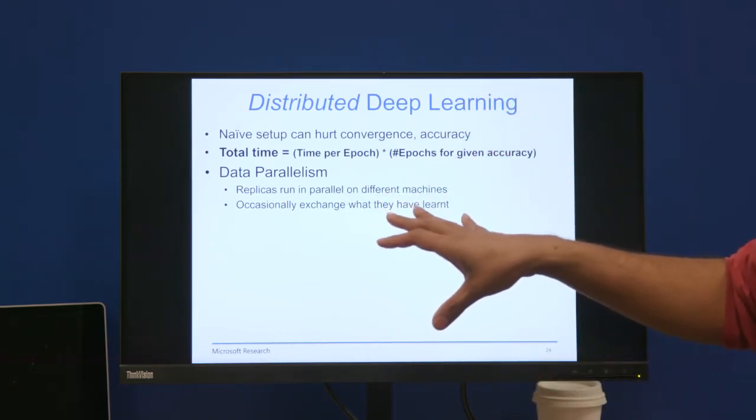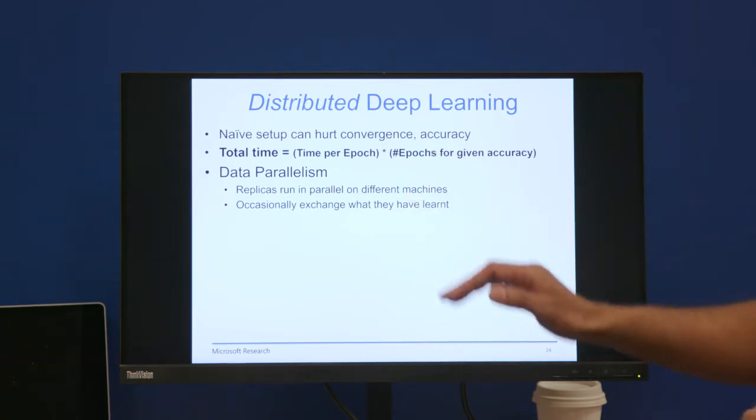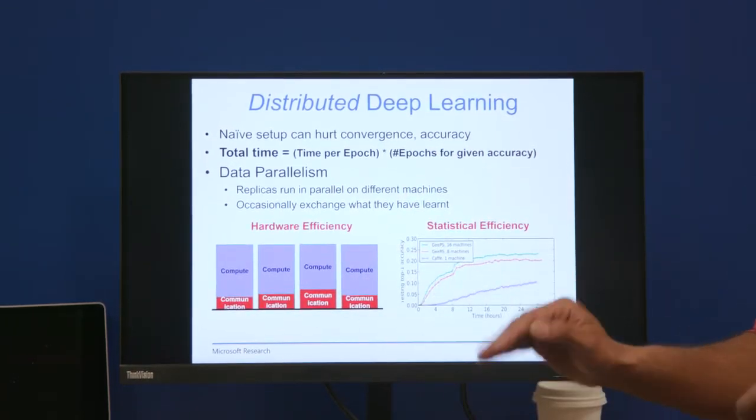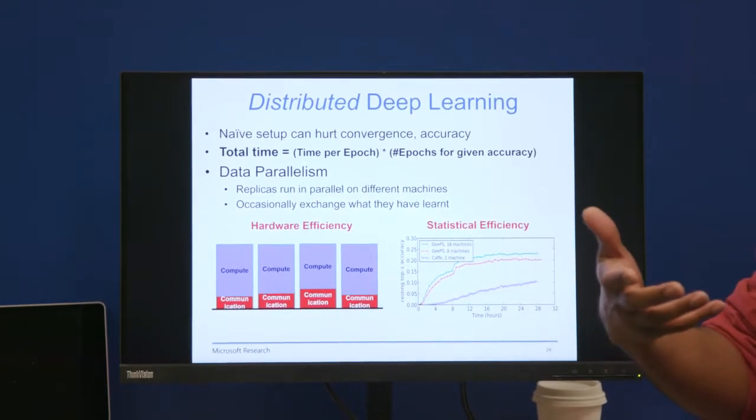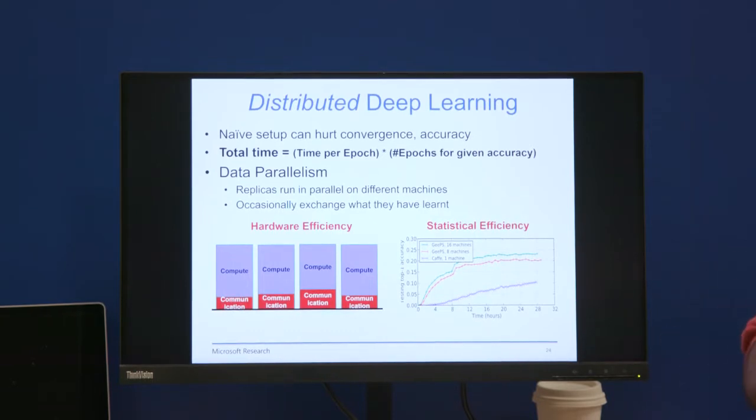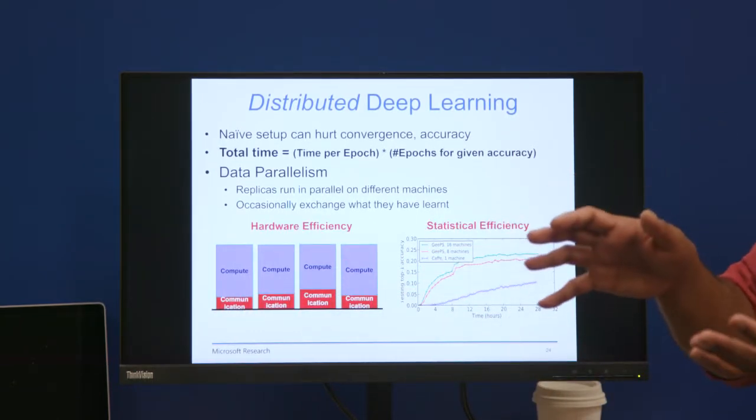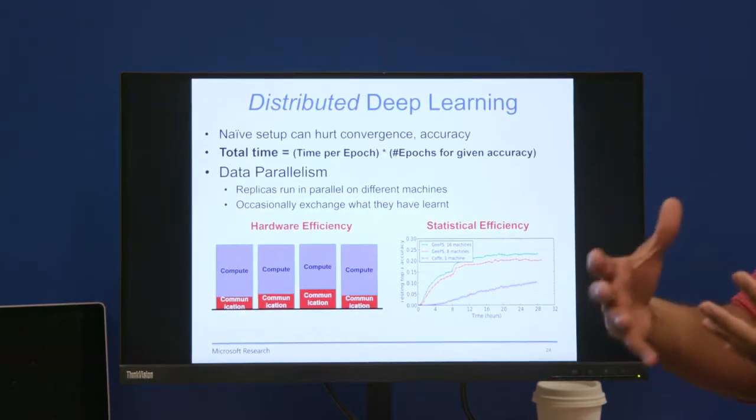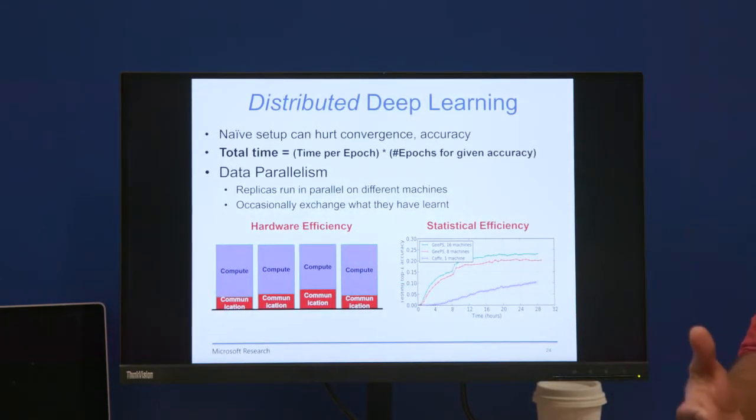One of the predominant ways of parallelizing DNNs is this thing called data parallel training, where you run multiple replicas. And these replicas communicate with each other every so often. If you aggregate all the times for compute and communication stalls, you notice this pattern where there is a bunch of time you're spending just communicating. The problem there, of course, is that of hardware efficiency. You're waiting for communication to occur, and you're not doing any compute. This is including optimizations like weight-free back propagation that try to pipeline communication and computation.